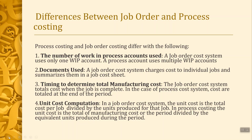Number three is the timing to determine total manufacturing cost. In the job order cost system, costs are totaled when the job is complete, whereas in the process cost system, costs are totaled at the end of the period. Number four is the unit cost computation. In the job order cost system, the unit cost is the total cost per job divided by the units produced for that job. Whereas in process costing, the unit cost is the total manufacturing cost for the period divided by the equivalent units produced — that is, the sum of material costs and conversion costs, each divided by their respective equivalent units.